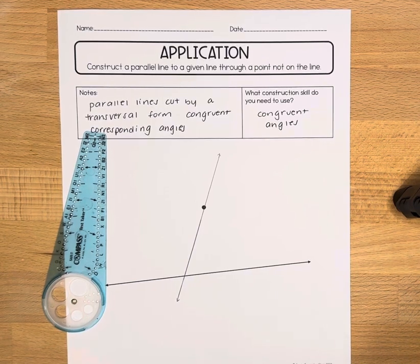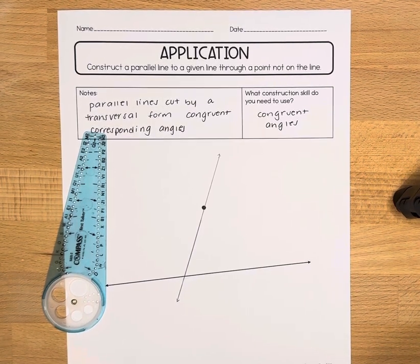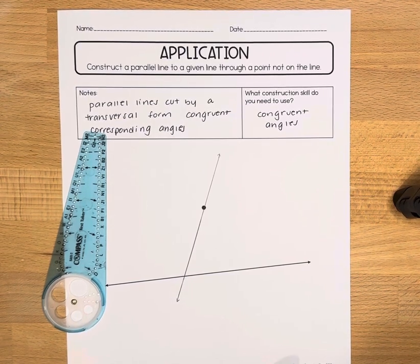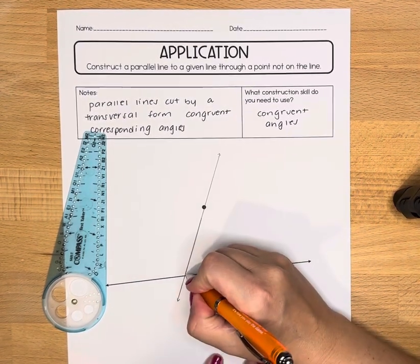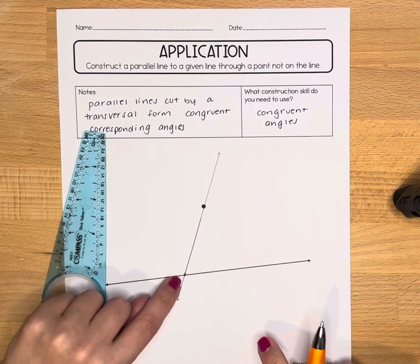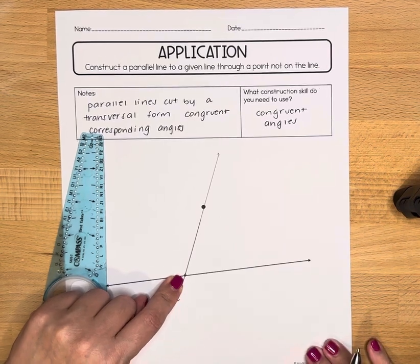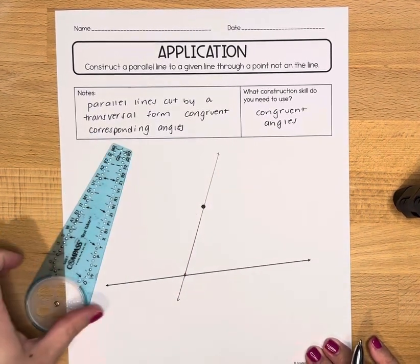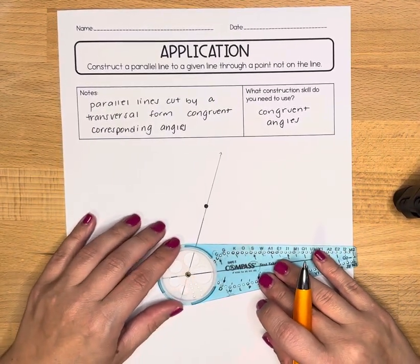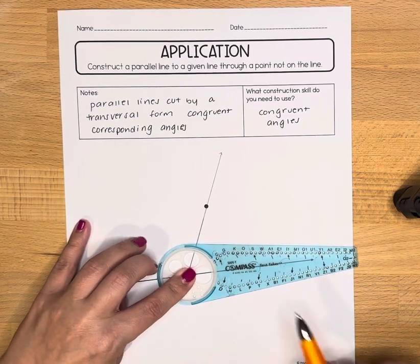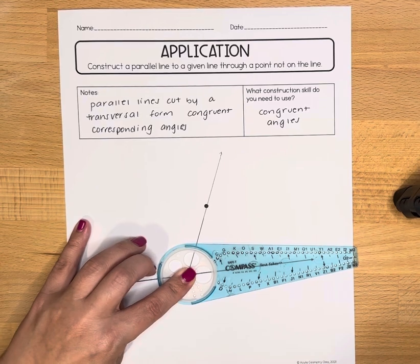We're going to do our congruent angle construction, and we're really going to do it twice in this video because we want a pair of angles that are congruent to each other. I'm going to start with the gold ring of my compass on this intersection point, where the first line and the transversal cross. And I'm going to draw an arc of any size so that it crosses both of those lines.